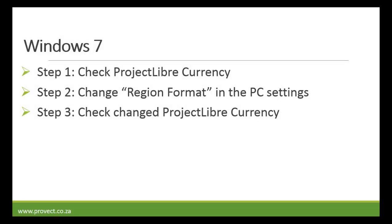Now let's start with Windows 7. There are three basic steps that we will follow. First we will check the currency in Project Libre. Secondly we're going to change the region format in the PC settings. And thirdly we're then going to check the changed Project Libre currency.